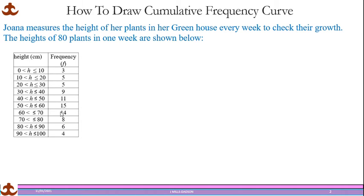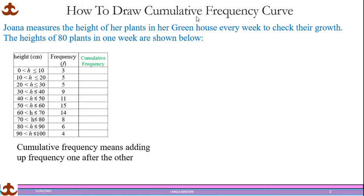The 14 here shows that 14 of her plants measure between 60 and 70. Now, the word Cumulative Frequency simply means adding up the frequency one after the other. So when you are supposed to draw a Cumulative Frequency Curve from the Frequency Table, you need to create one more column with the heading Cumulative Frequency, and as the name suggests, you are going to add the frequency one after the other.